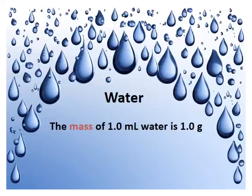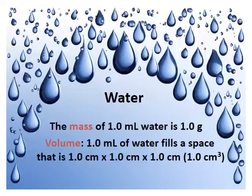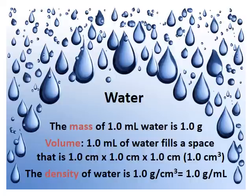Last week we did a lab called measuring mass, and in that lab we determined that the mass of one milliliter of water was one gram. So now the interesting thing about water and the metric system is that one milliliter of water fills a space that's one centimeter by one centimeter by one centimeter. So one centimeter cubed is equal to one milliliter. And if you look, one milliliter of water weighs one gram, has a mass of one gram, and one milliliter of water fills the space that's one centimeter cubed. So that means the density of water is one gram per centimeter cubed, or you can call that one gram per milliliter.